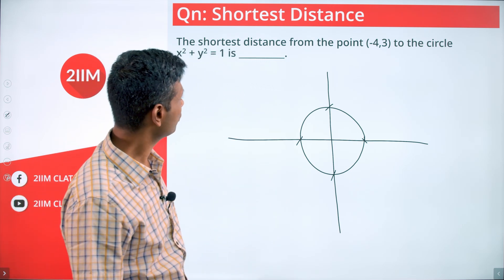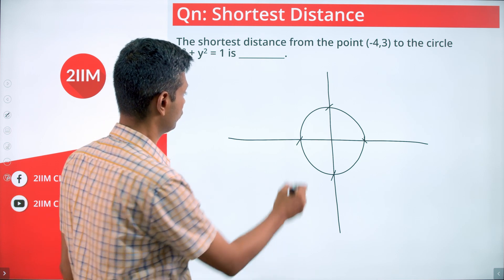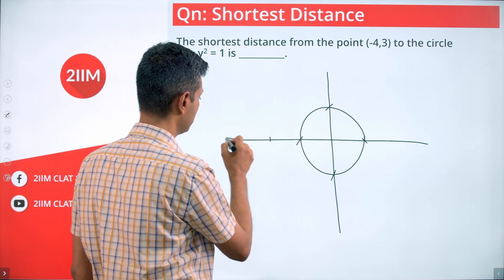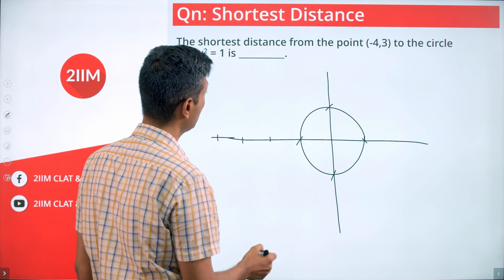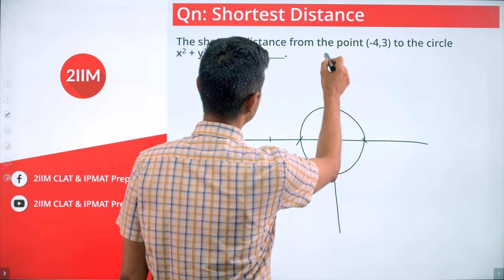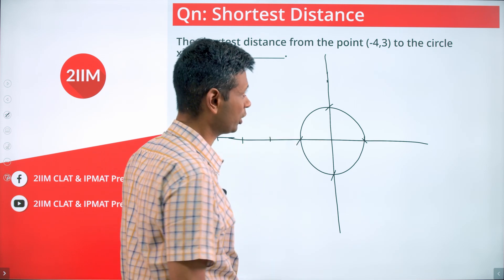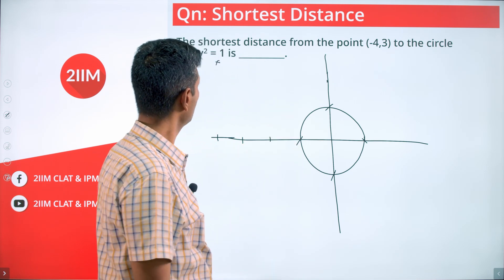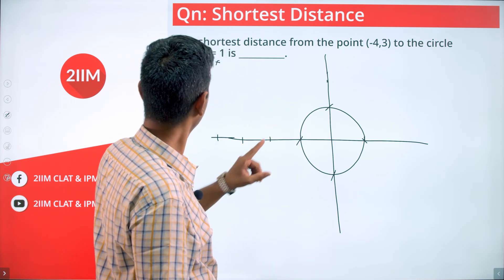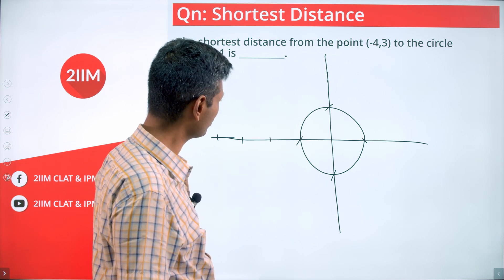I want to find the distance from the point (-4, 3). Going across: -1, -2, -3, -4, and up: 1, 2, 3 — so somewhere here. I'm roughly marking the point. The shortest distance from the point (-4, 3) to the circle x² + y² = 1.